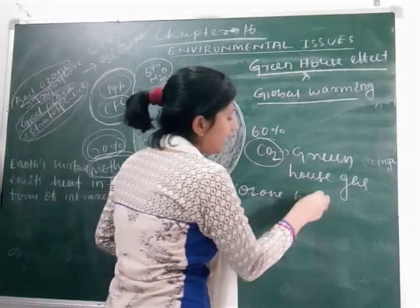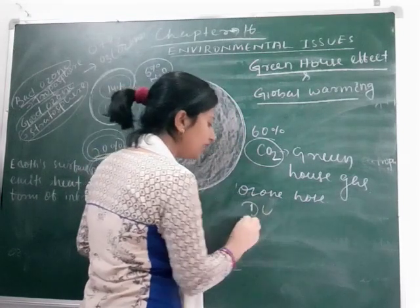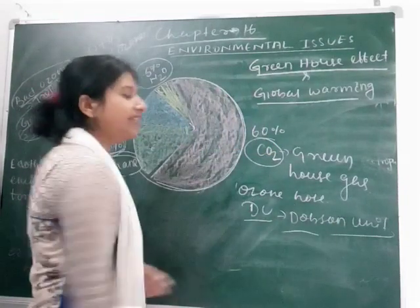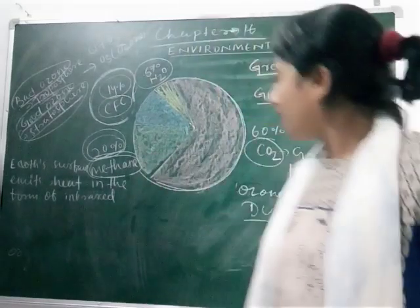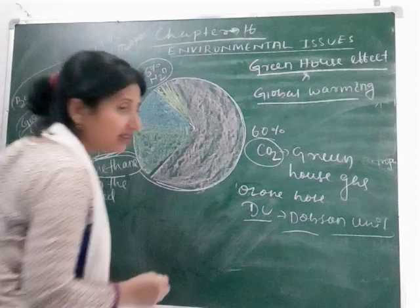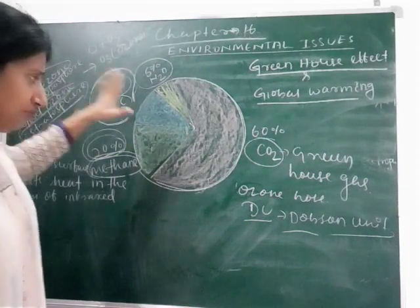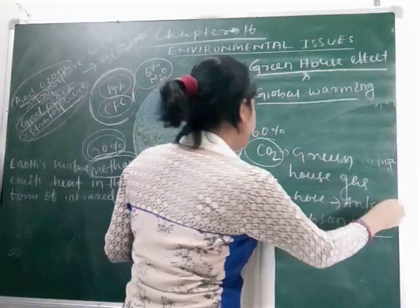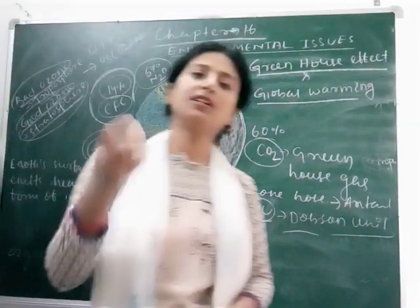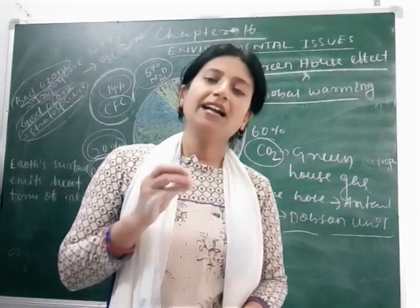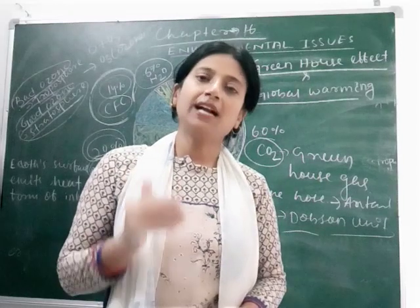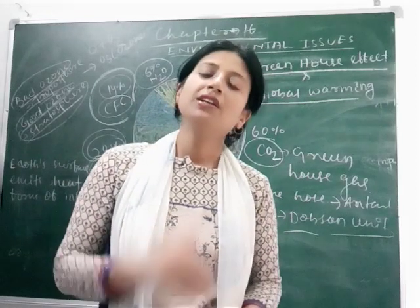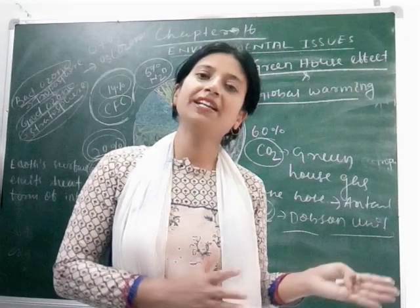The ozone hole is measured in Dobson units, and its size is getting larger and larger. As the stratosphere gets depleted due to human activity, large ozone holes occur near Antarctica, allowing UV rays to reach the earth. Also, due to increasing temperatures, glaciers start melting, causing flood-like situations in many parts of the world. High temperatures are also converting some parts of the world into deserts — a process called desertification.